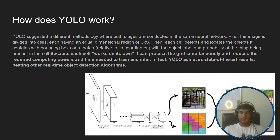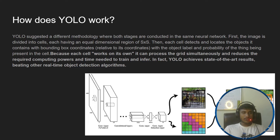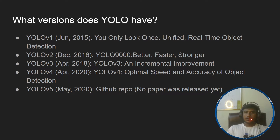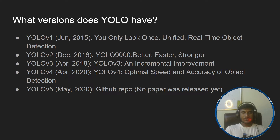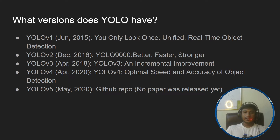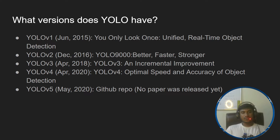In fact, YOLO achieves state-of-the-art results, beating other real-time object detection algorithms. Looking at the version history: in 2015, YOLOv1 was released — 'You Only Look Once: Unified Real-Time Object Detection.' Then in 2016 a better version came, YOLOv2. In April 2018, incremental improvements were made to the architecture resulting in YOLOv3.